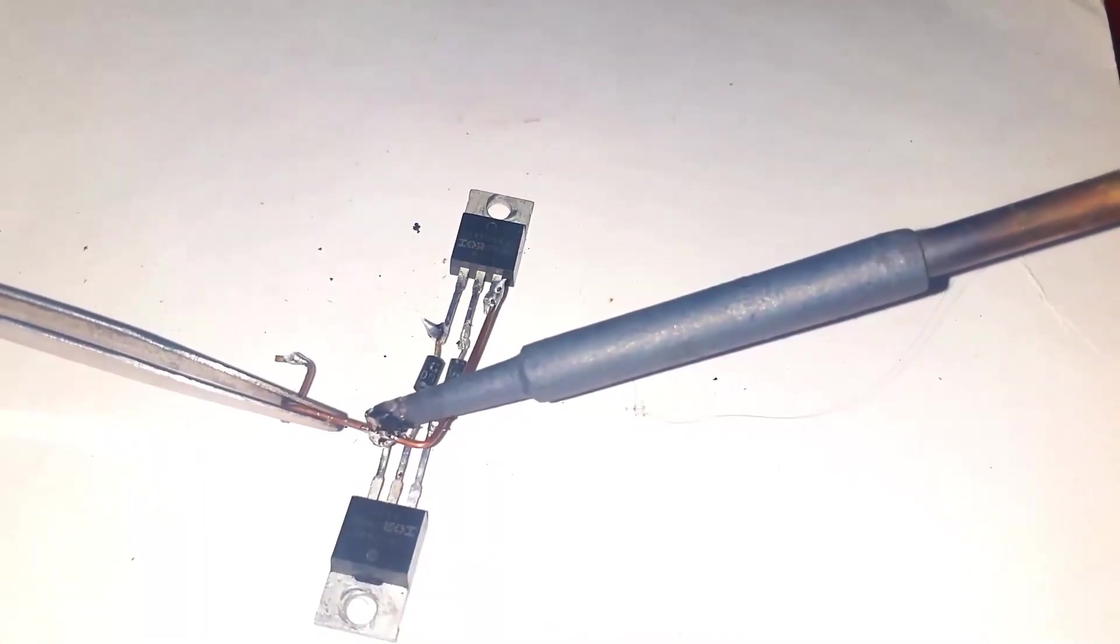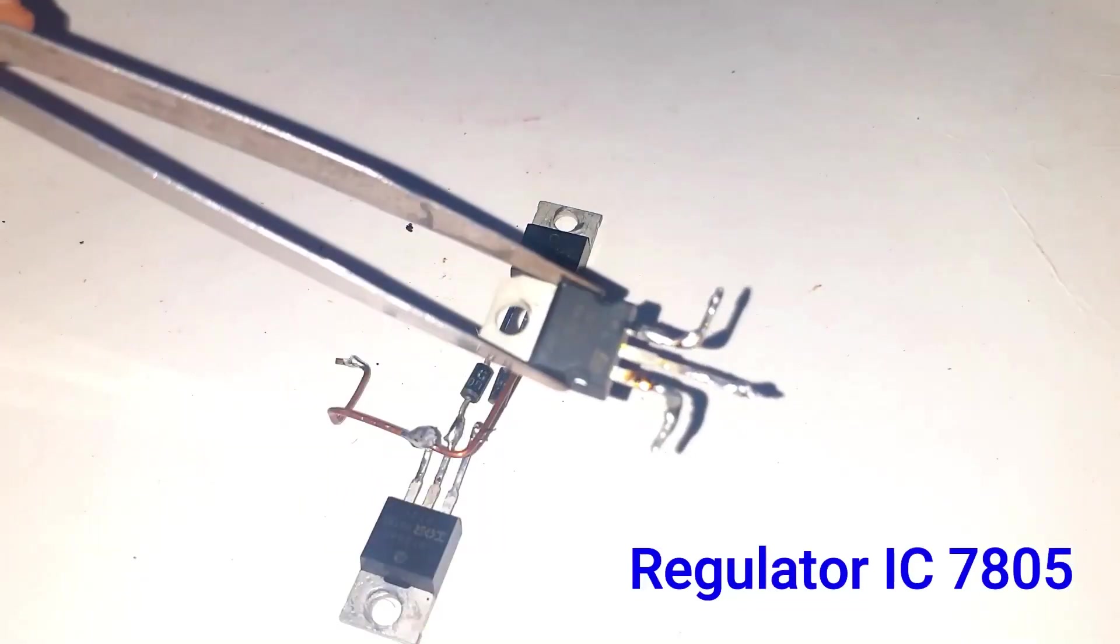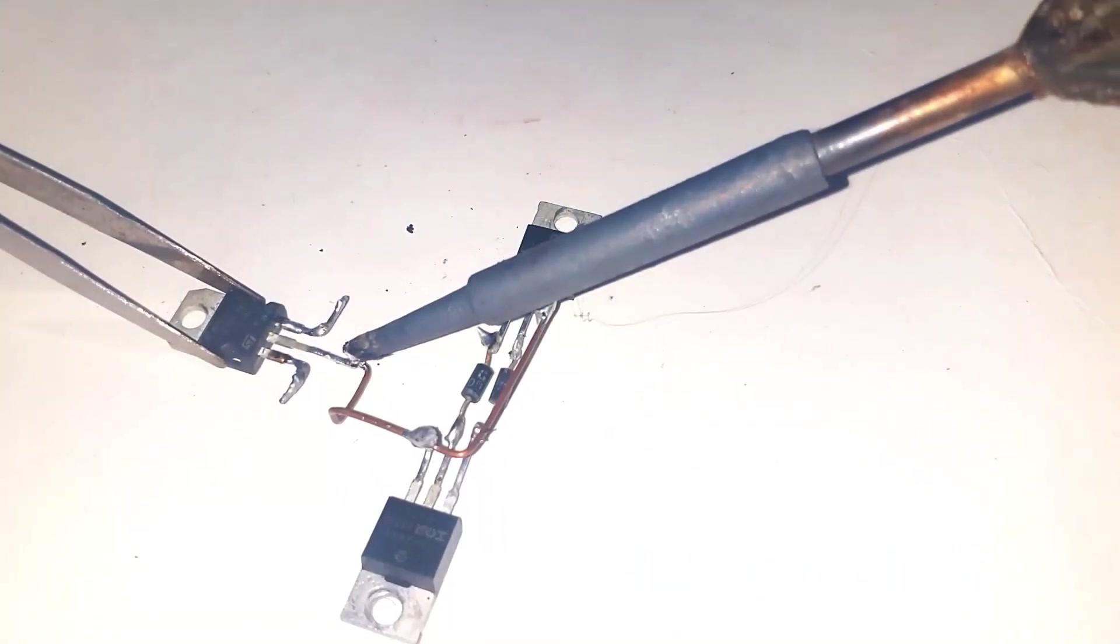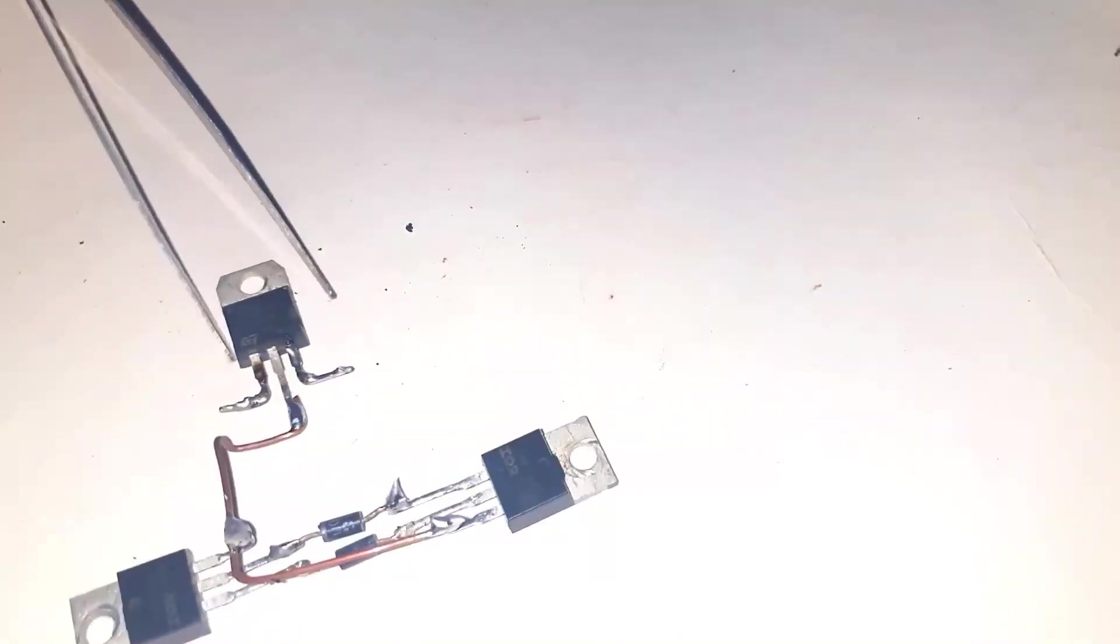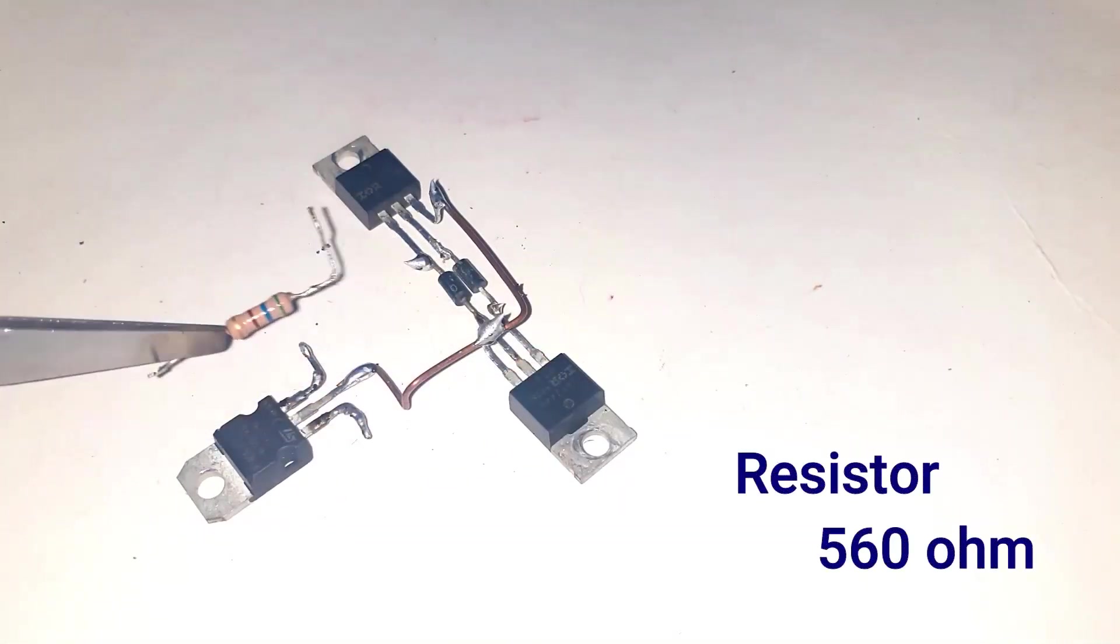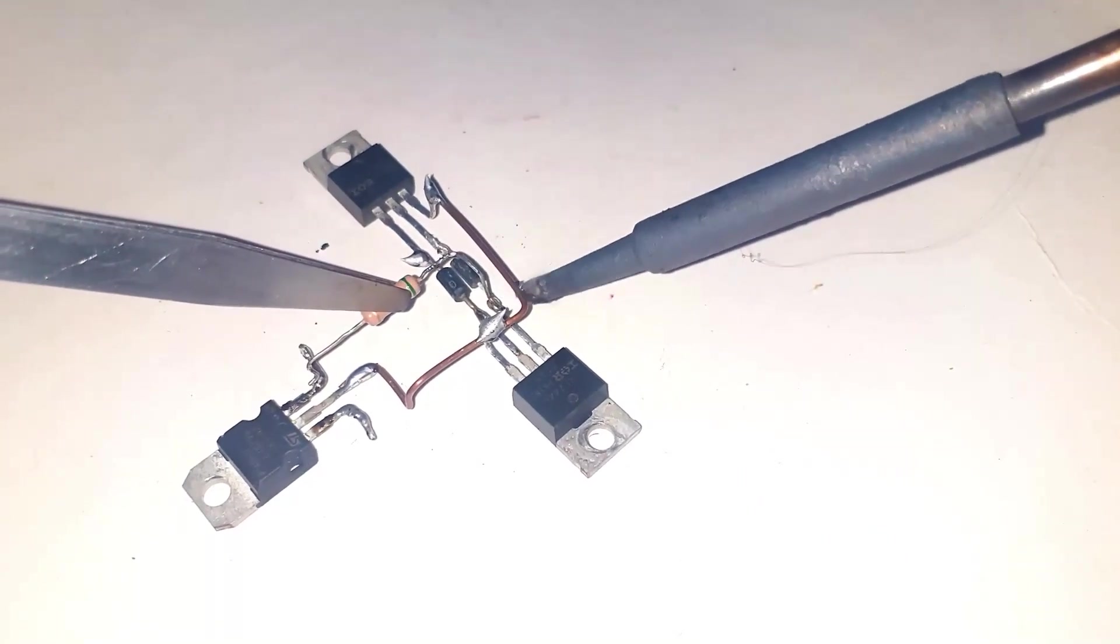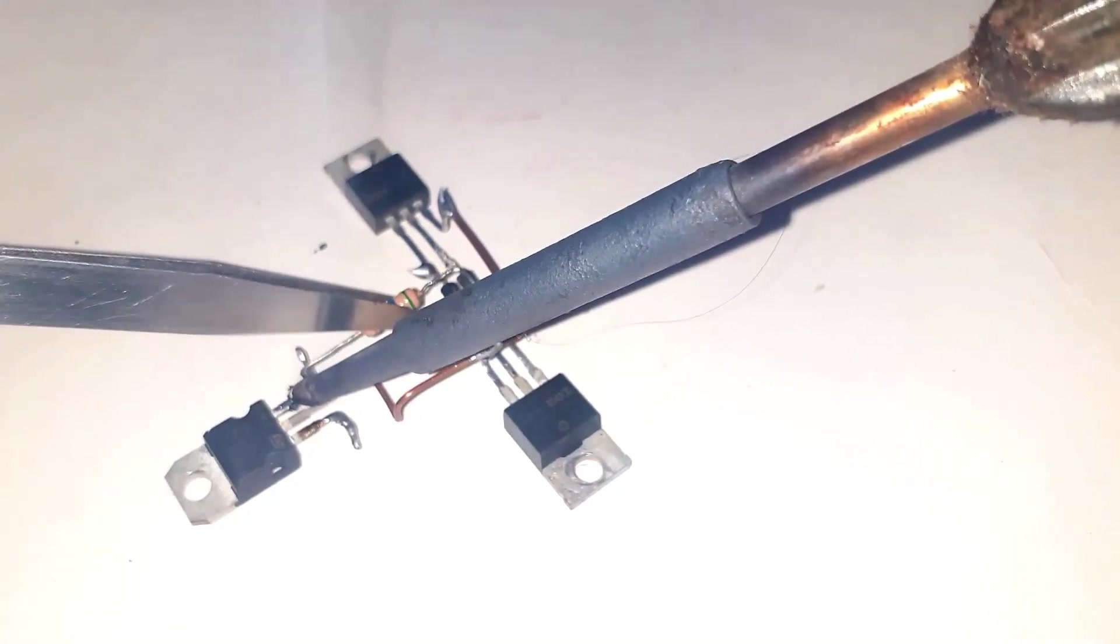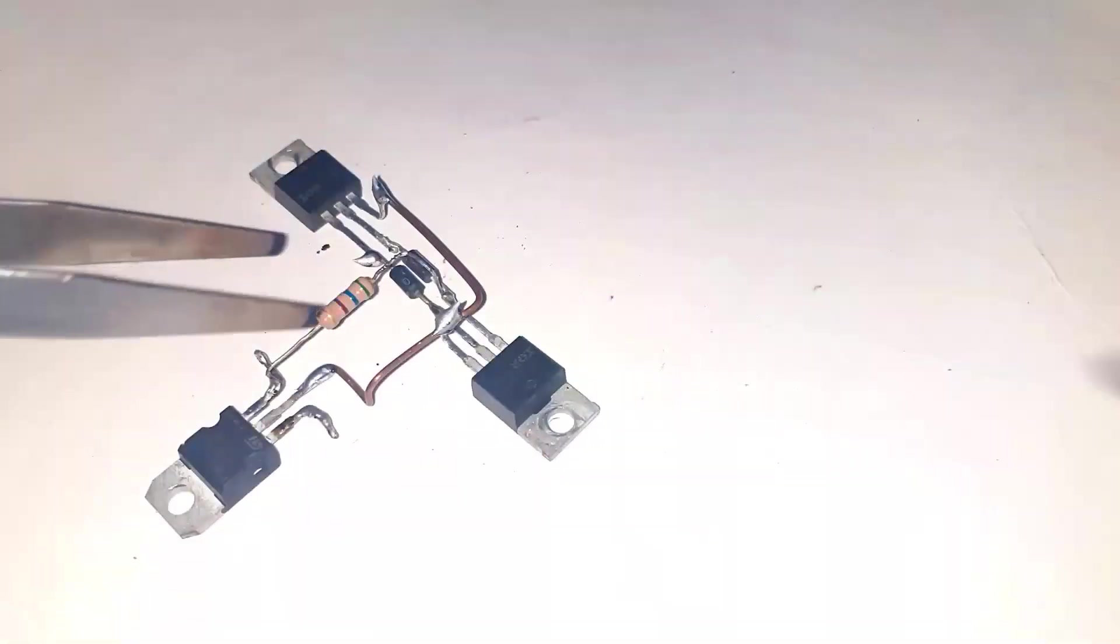This is copper wire which I get from wiring wire, and we have to short both terminals of this MOSFET. This is a 5 volt regulator IC LM7805. Connect pin number 2 of this regulator IC to the copper wire that I connected to the source terminal of both N-channel MOSFETs.